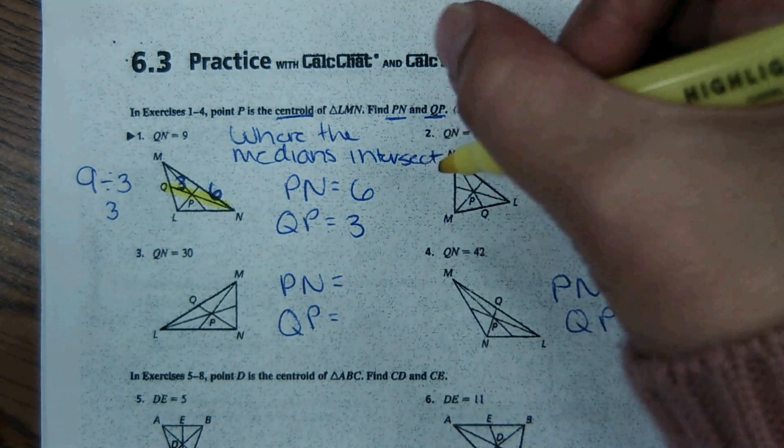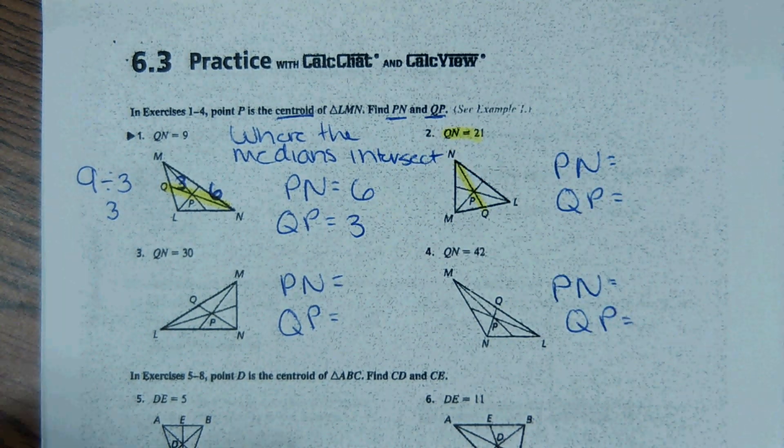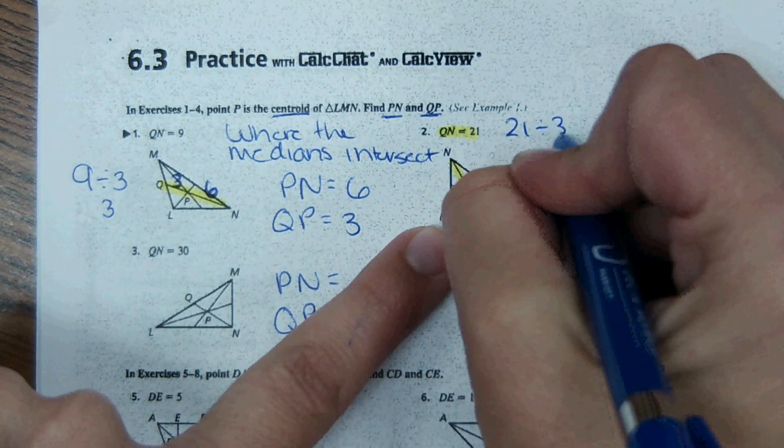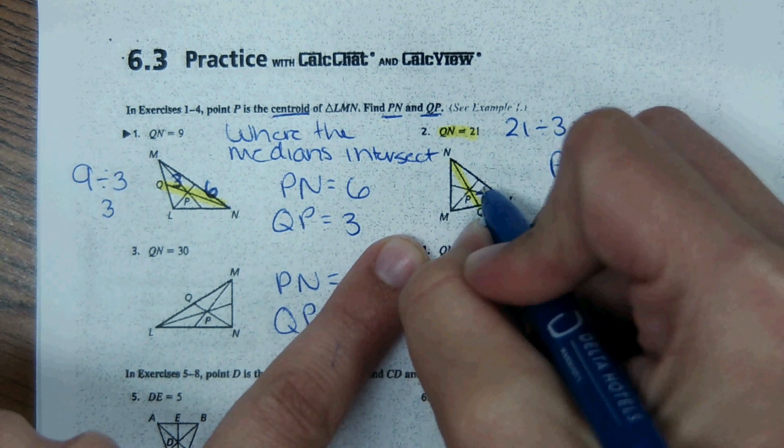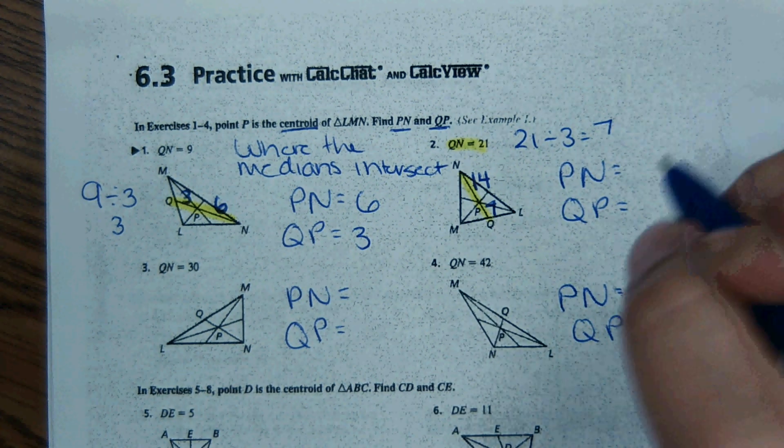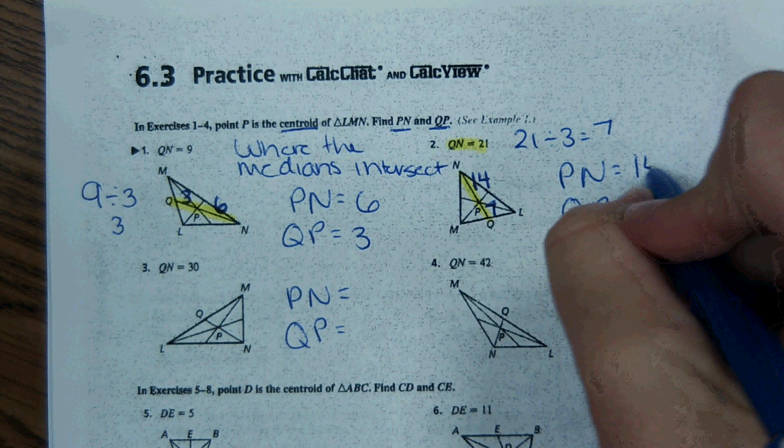And then same over here. QN says QN is 21. So I'm going to take 21 divided by three to get what one part would be, which is seven. So the shorter segment is seven units long. And then the longer one is double that, which is 14. So PQ is seven, and PN is 14.